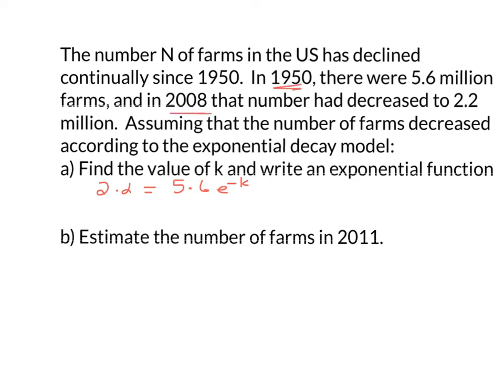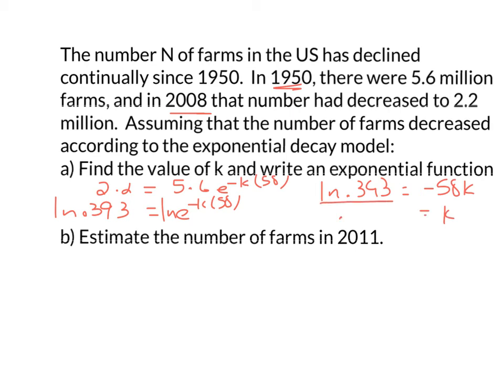From 1950 to 2008 is 58 years, so t equals 58. I divide both sides by 5.6: 2.2 divided by 5.6 gives me 0.393. So 0.393 equals e to the negative k times 58. I take the natural log of both sides: natural log of 0.393 equals negative 58k. So k equals natural log of 0.393 divided by negative 58, and I get k equals 0.016.